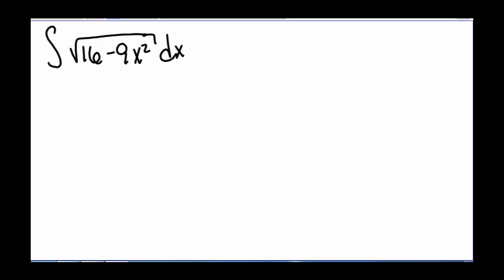Here we have the integral of the square root of the quantity 16 minus 9x squared. To start, we want to identify what kind of sum or difference we have that we're going to try to simplify.